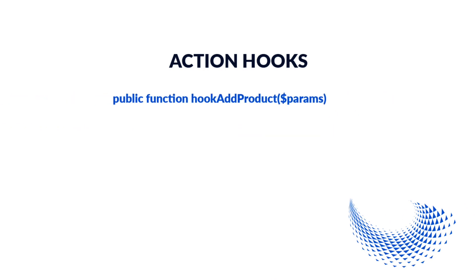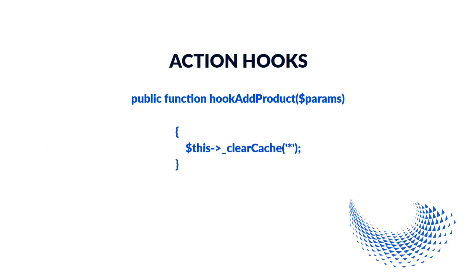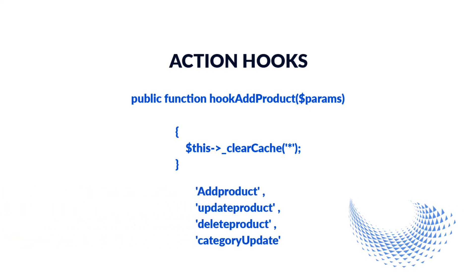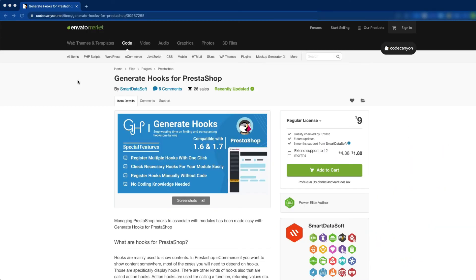In the featured product module, the below hooks are used as action hooks, which will clear the cache when a specific action occurs — for example, add product, update product, delete product, or category update. Then this hook will be called and it will clear the cache. If you want, you can try the generate hooks module for PrestaShop. By this module, you can manage the PrestaShop hooks to associate with a module, which will make it easy to manage hooks and save you time.